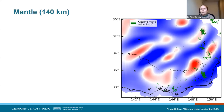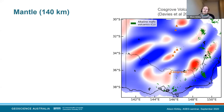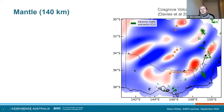Alkaline Cenozoic mafic volcanics show a reasonable correlation with the conductors. The Australian plate movement vector also shows a similar alignment to these conductors. The Cosgrove volcanic track, found to run from Queensland down to Victoria associated with plate movement over a hotspot, also seems to show some correlation. This volcanic track was associated with intermediate lithospheric thickness, and it correlates with some of these conductors. Are we potentially mapping the metasomatized source region of these volcanoes?